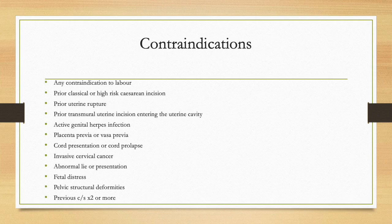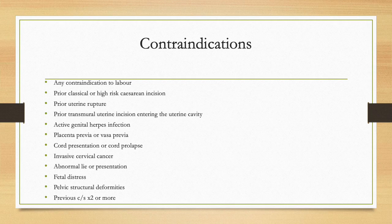Contraindications to induction of labour include any contraindications to labour such as: prior classical or high-risk caesarean incision, prior uterine rupture, prior transmural intrauterine incision entering the uterine cavity, active genital herpes infection, placenta praevia or vasa praevia, cord presentation or cord prolapse, invasive cervical cancer, abnormal lie and abnormal presentation, fetal distress, pelvic structural deformities, and two or more previous caesarean sections.